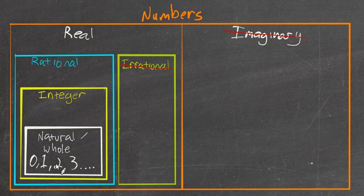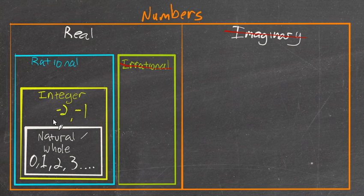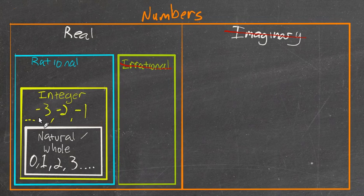So those are also, see this box is inside the integer box. So these are integers as well. Some numbers that are integers, but they're not whole numbers, so they're outside of the whole numbers, would be negative 1, and negative 2, and negative 3, and so on. So we've got the positive numbers and 0, they're integers. Also, integers, but not natural or whole numbers, are the negative numbers.